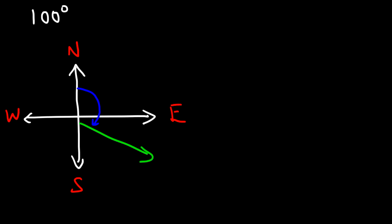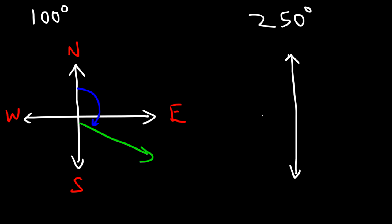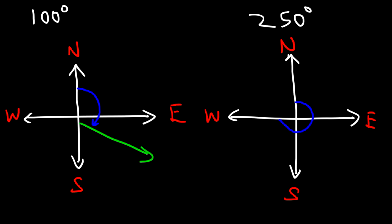Let's try another example. What if we want a bearing of 250 degrees? Go ahead and draw a picture for that. So we have north, south, east, and west. Direction is not stated, so we need to start with the north line and rotate clockwise. This is 90, 180. This will be 270, but we can't go that far. So 250 is just before 270 — 250 would be in that region.